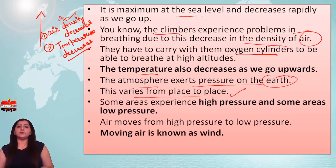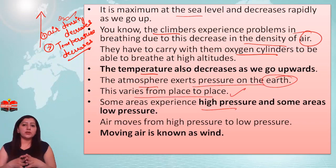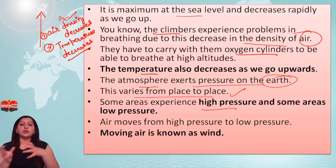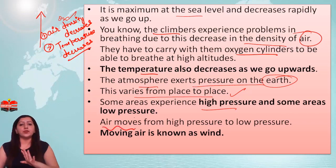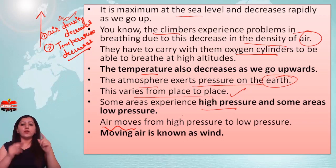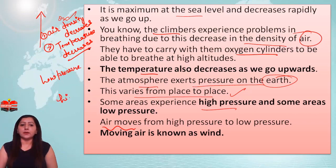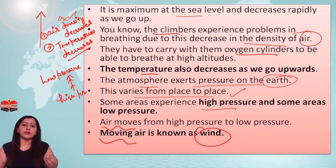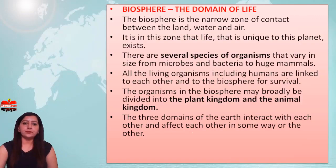The atmosphere exerts pressure on the Earth, and this varies from place to place. Air moves from high pressure areas towards low pressure areas, and this movement of air is what we call wind.